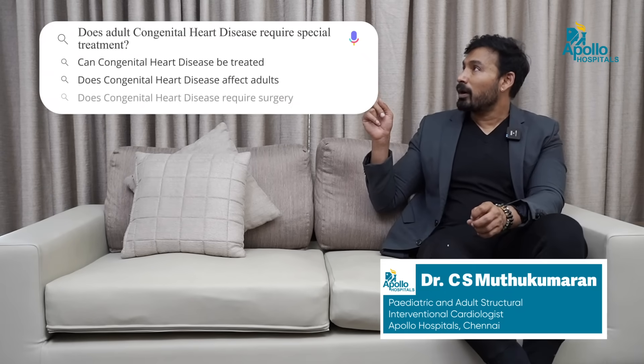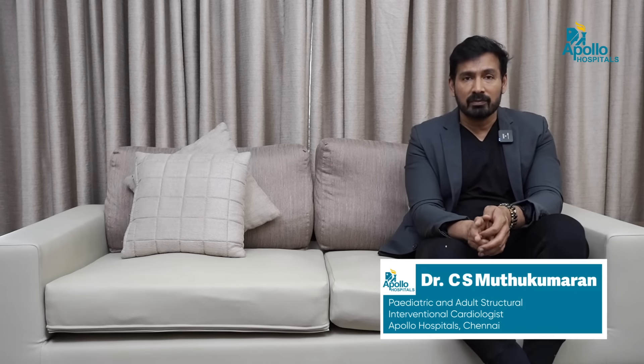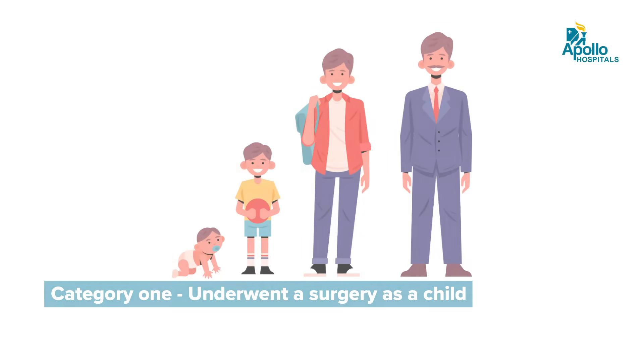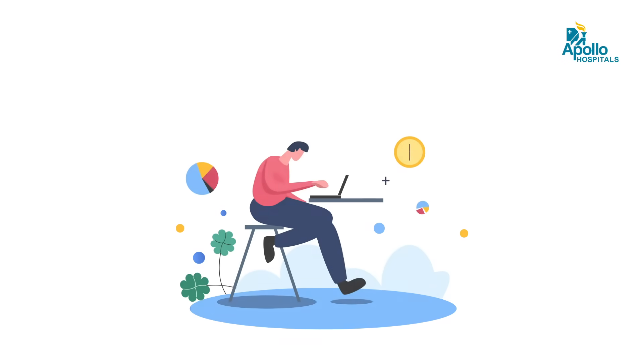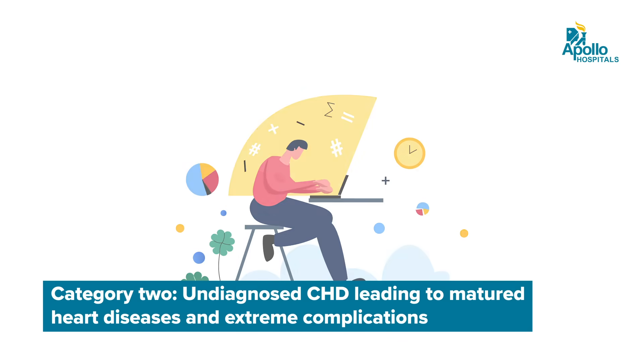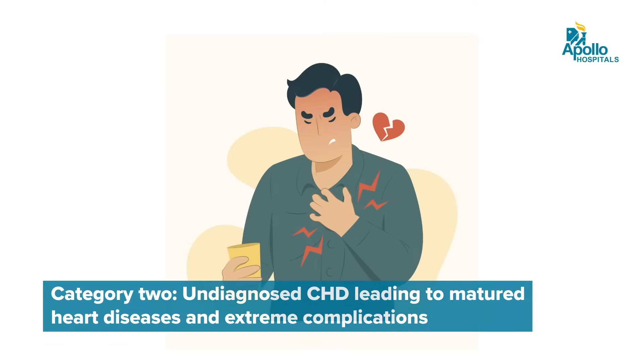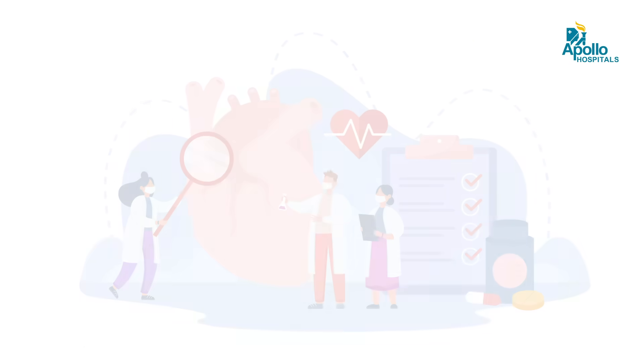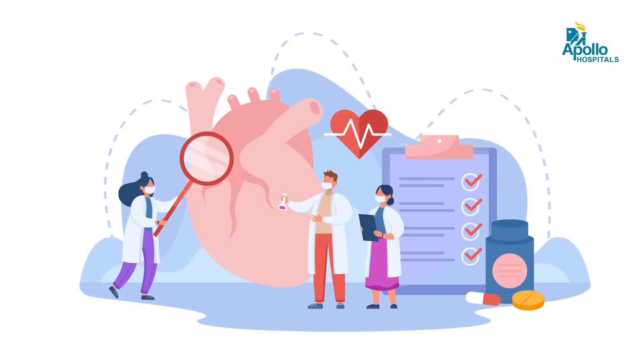Does adult congenital heart disease require special treatment? Yes. Adults with congenital heart disease fall into two categories: either they had surgery as a child and grew up with the heart disease, requiring further intervention or surgery as adults; or they are adults with previously undiagnosed congenital heart disease. When diagnosed late, the heart disease can be in an extreme or matured state, requiring a specialized team for intervention and treatment.